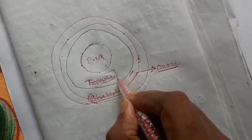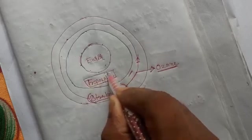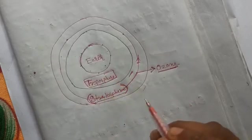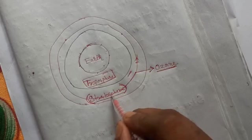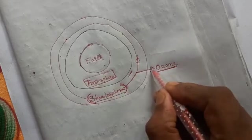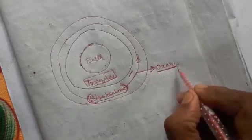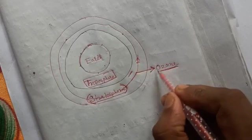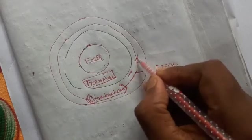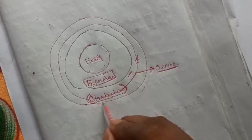Aeroplanes fly in stratosphere not in troposphere. Weather phenomena take place in troposphere. In stratosphere you will find ozone layer which helps us to protect from ultraviolet rays and aeroplanes fly in that stratosphere.